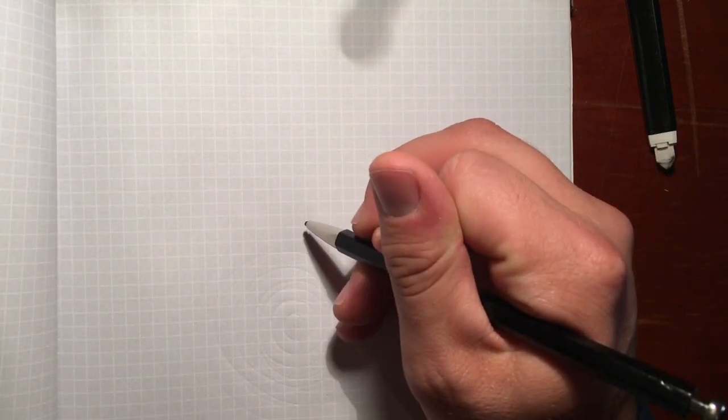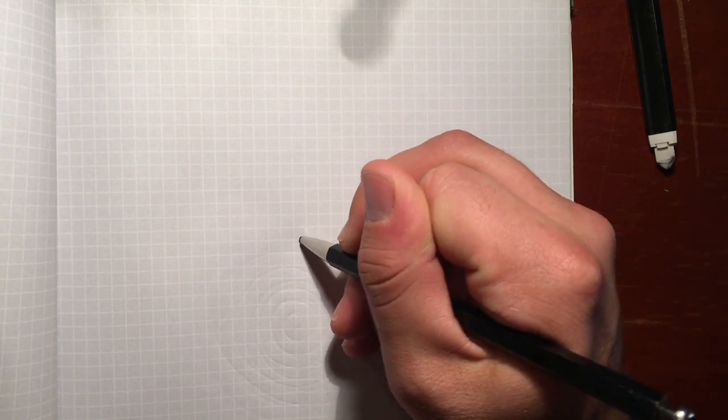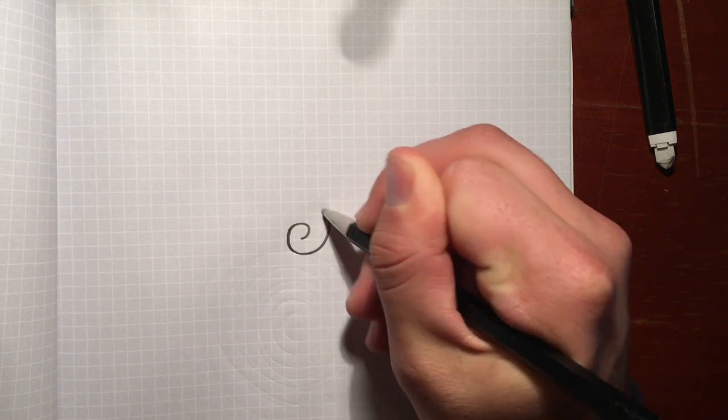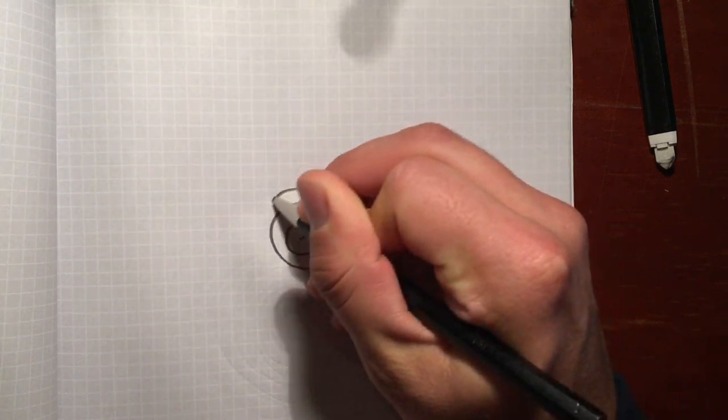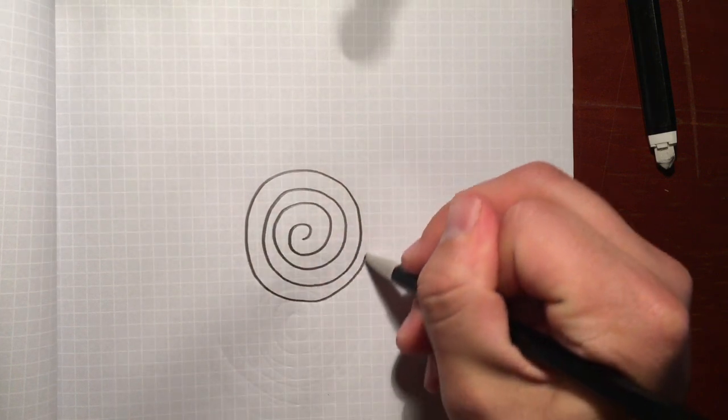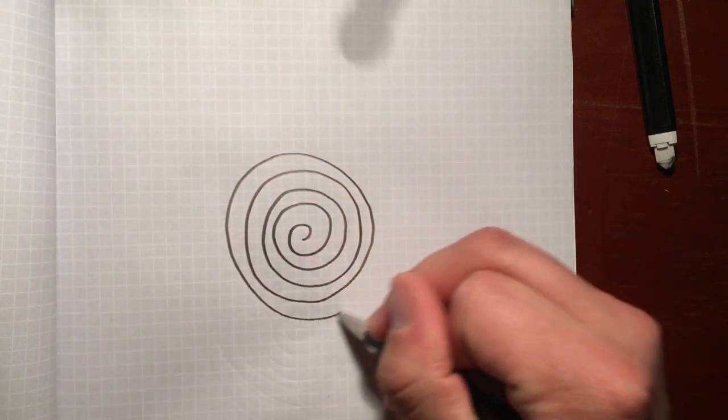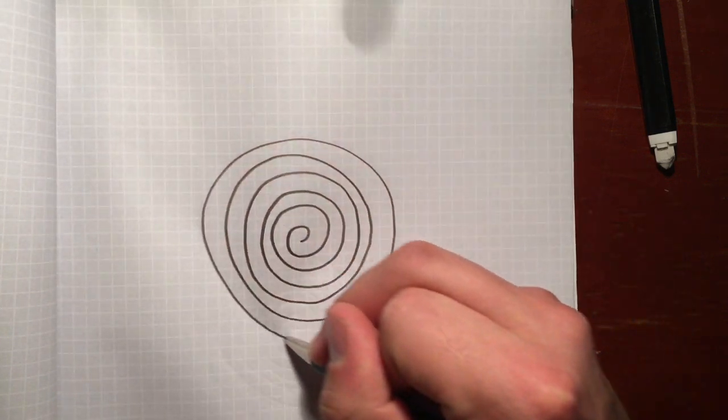Okay, to make a five-circuit Classical Labyrinth from a spiral, you just need to create seven loops. One, two, three, four, five, six, seven.